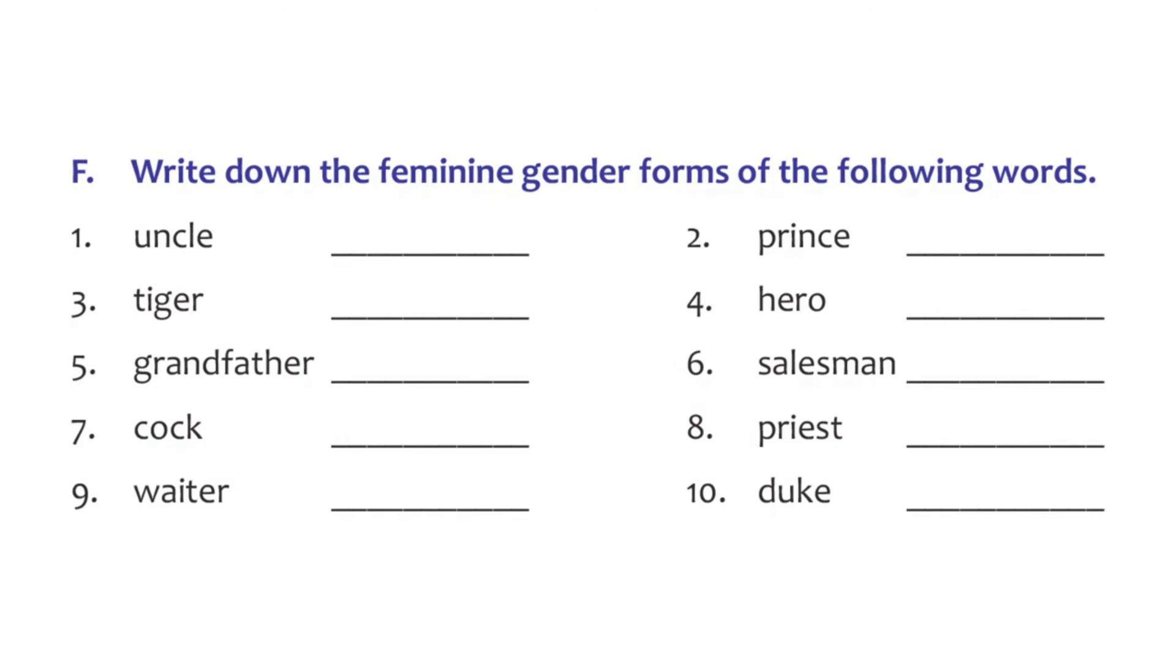Let's move on to the exercise that's based on this concept of gender. On page 33, we find this: Write down the feminine gender forms of the following words. Let's try. One: uncle. What is the feminine gender of this word? Aunt. It's a totally different word.